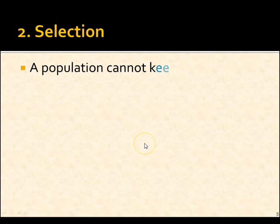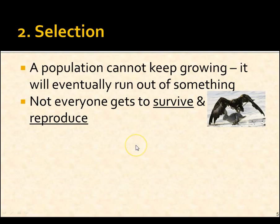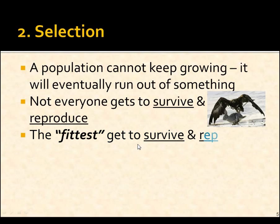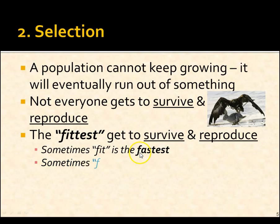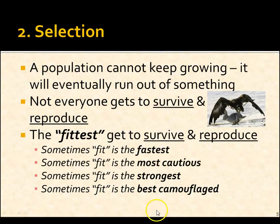The second part is selection. A population can't keep growing — it's going to run out of something. This is like musical chairs: the music stops and there's not enough chairs. Not everyone gets to survive and reproduce. Someone is not going to be able to pass on their DNA, and it's the fittest that can. Now, fittest can mean a lot of things. Sometimes it's fast; sometimes fit is the most cautious — maybe it's the rabbit that's too scared to go outside. Sometimes fit is the strongest, and sometimes fit is just camouflage. If you're the fittest, you get to survive and, more importantly, reproduce.